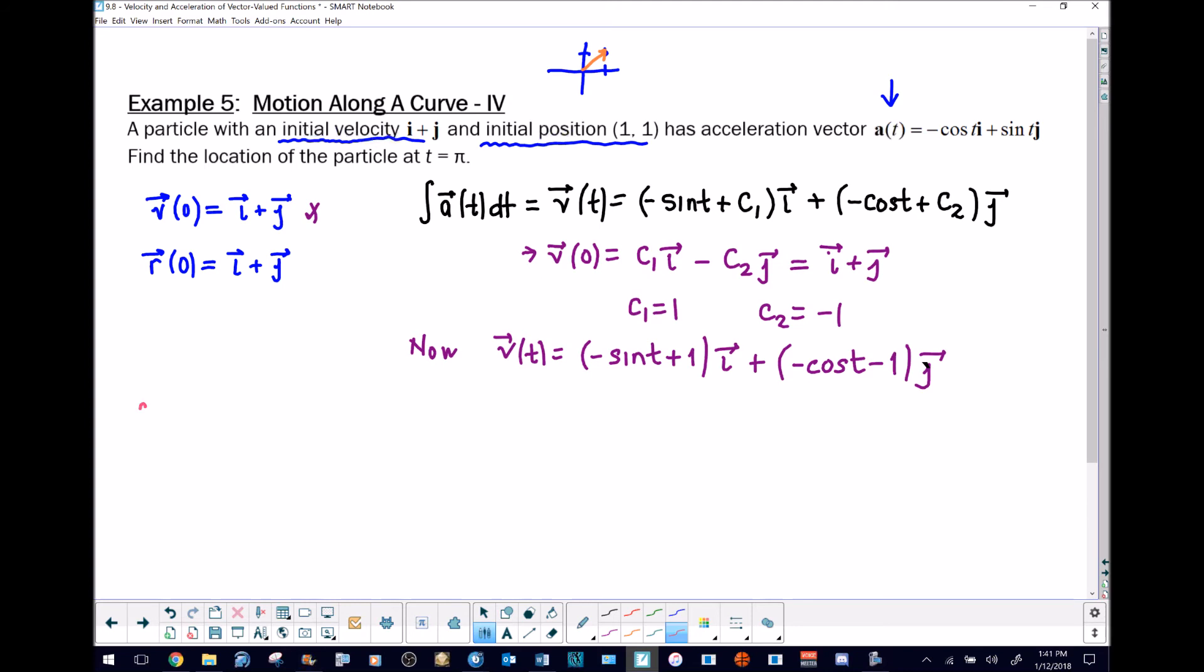If we integrate this velocity vector, we know that will produce the position or r vector. The antiderivative of negative sine of t plus one would be negative negative cosine, so positive cosine of t plus t, plus another constant c3. Then for our j component, the antiderivative of negative cosine is negative sine, minus t, plus c4 times j.